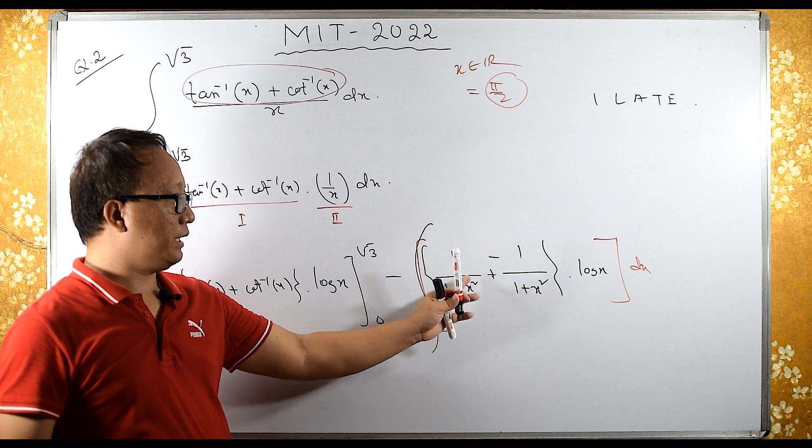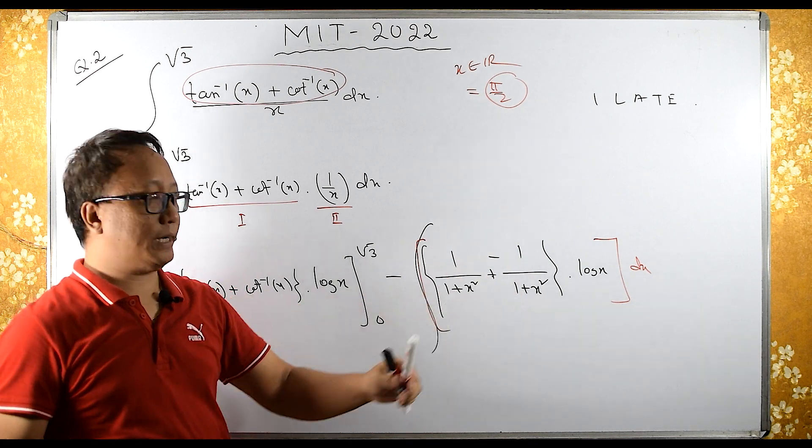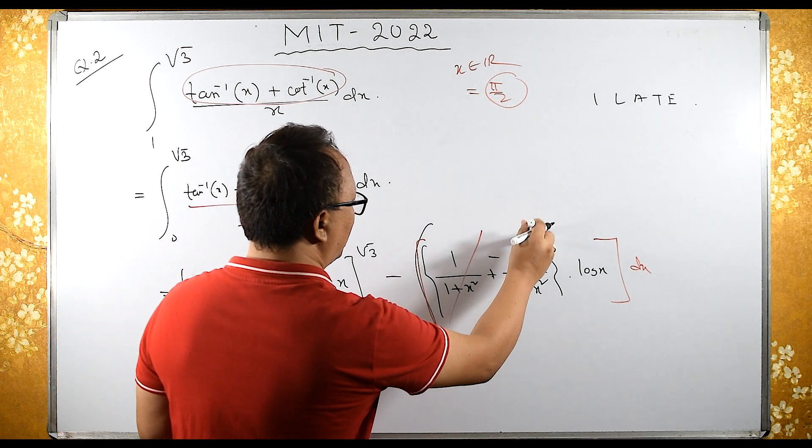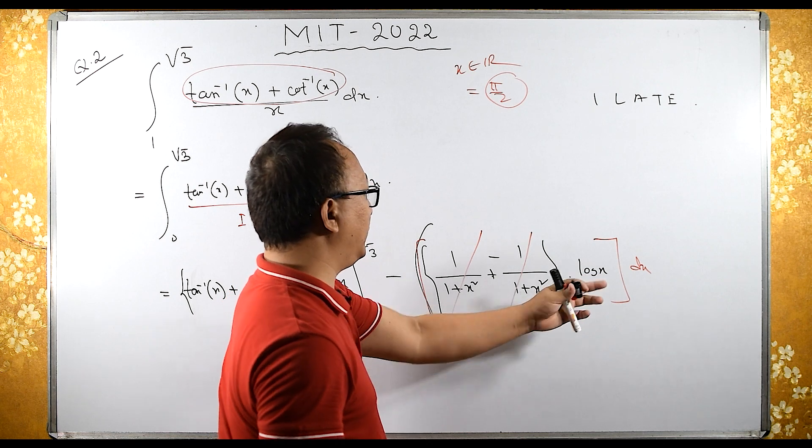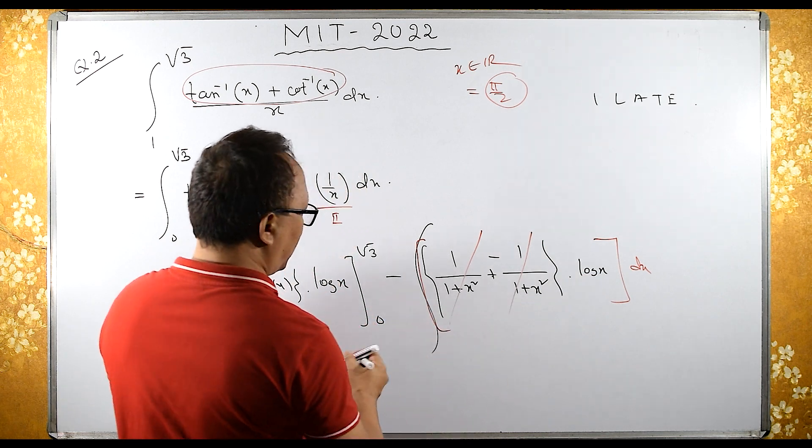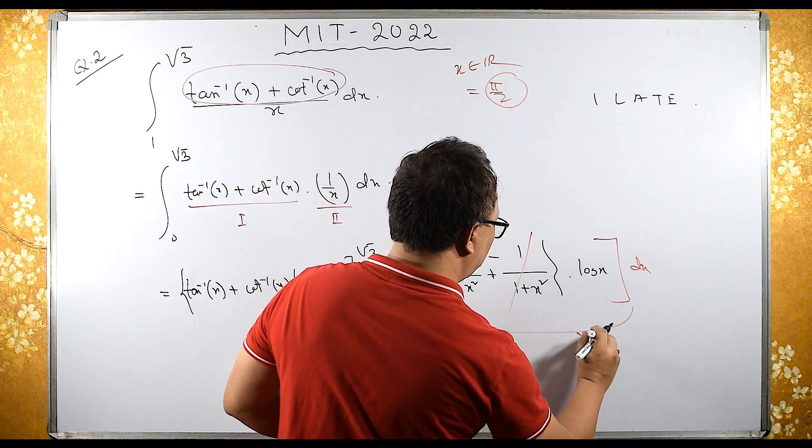This is the same term. Here we have plus, here we have minus. So if we cancel this to 0, 0 times anything becomes 0. So this whole term becomes 0.